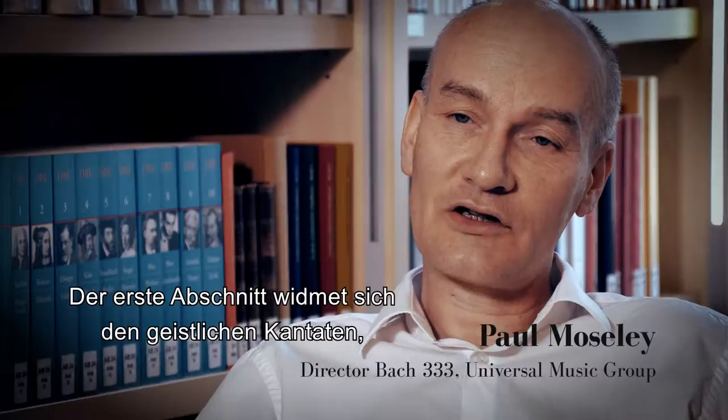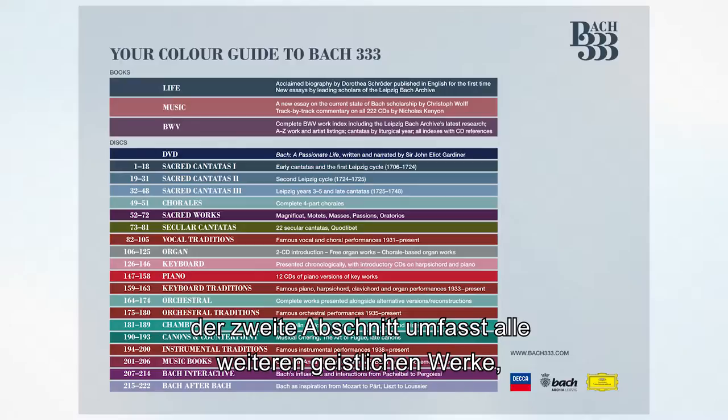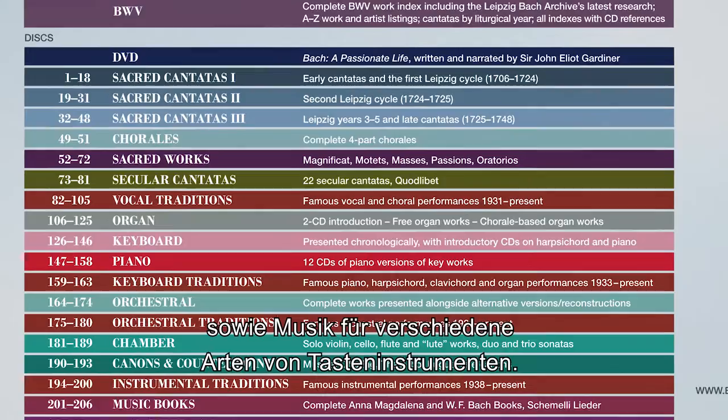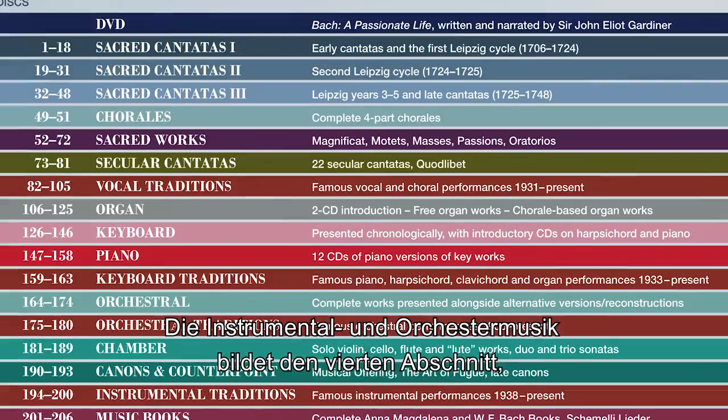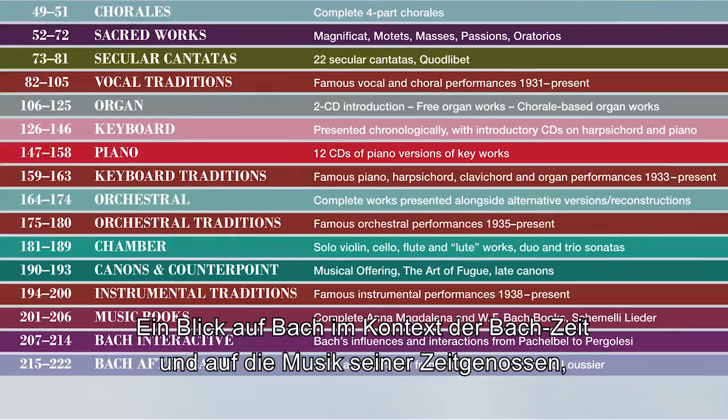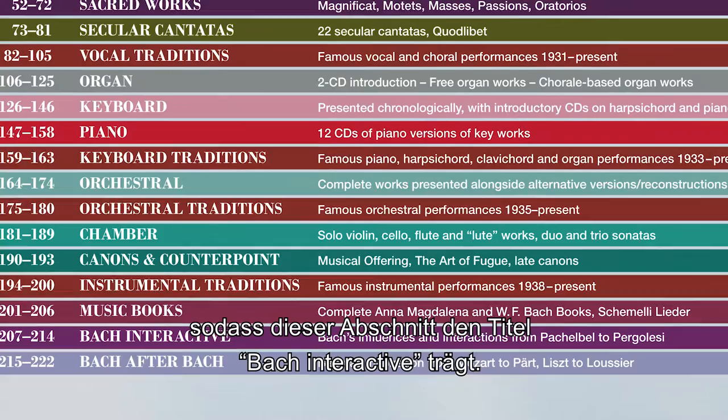The Bach 333 box is split up into four main sections. The first section is the sacred cantatas. The second section is all the other sacred works, including the chorales, the passions, and the oratorios. The third section is the keyboard music, including the organ music — all the music written for various kinds of keyboards. The fourth section is the instrumental and orchestral music. We finish with a supplement, which I'm very proud of, which looks at Bach since his own time and how Bach interacted and responded to other music of his time.